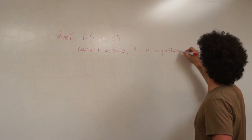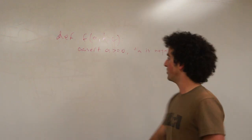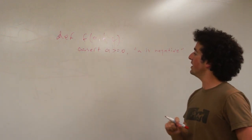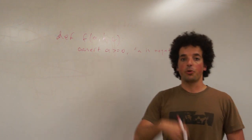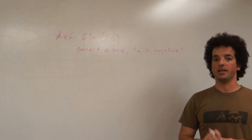Now if somebody using this function, you for example six months from now, would input a negative number here, the program would stop here, throw this assertion error, and tell you that a is negative.